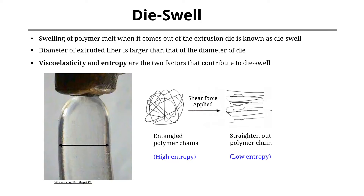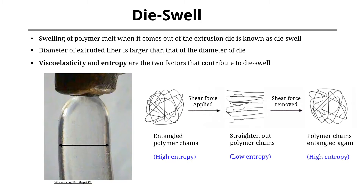As the material comes out from the die, the shearing force acting on polymer chains is removed, and chains start to coil up again and try to regain their high entropy coiled structure. During die swell, the polymeric material undergoes elastic deformation — when force is applied, polymer chains start to deform; when force is removed, chains go back to their initial shape. This behavior of polymer is called stress relaxation. So due to viscoelasticity and entropy, polymers show die swell behavior.